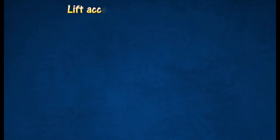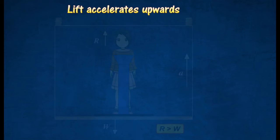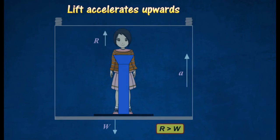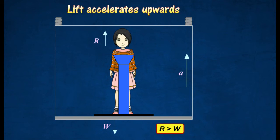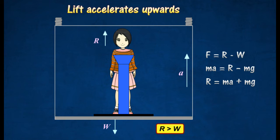When the lift accelerates upwards with an acceleration, the reaction force, R, will be more than the weight of the girl. The resultant force will thus be given by the following equation. The girl will feel heavier.